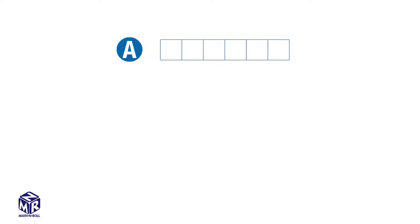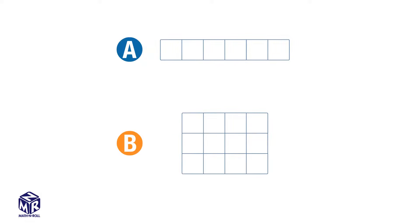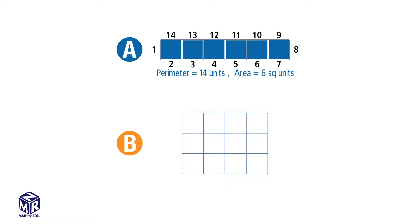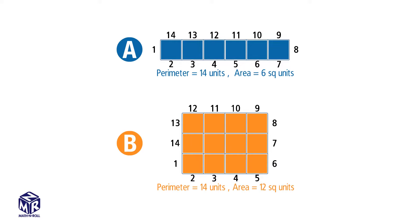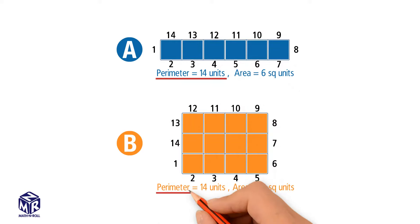Let's look at these two rectangles. Let's find the perimeter of rectangle A. We need to add all the sides. The perimeter is 14 units. The area is 6 square units. Now let's take a look at rectangle B and find its perimeter and area. The perimeter is also equal to 14 units, but the area is different — the area is equal to 12 square units. So rectangles can have the same perimeter but different areas.